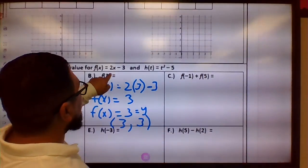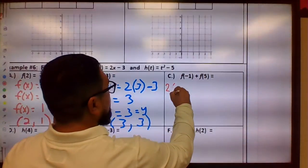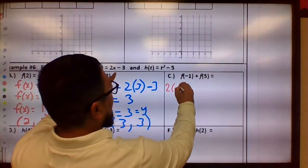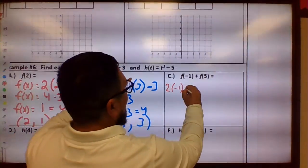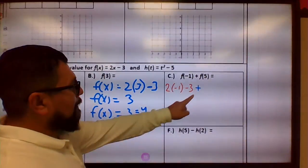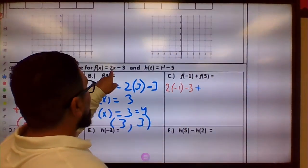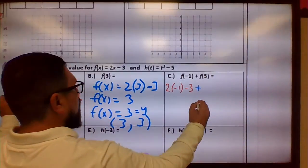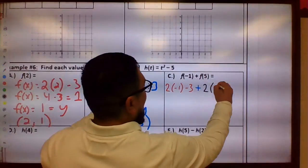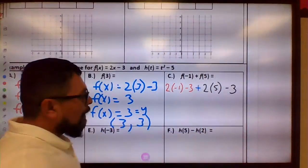So this is going to be, I'm going to put them in two different colors, so 2 times negative 1 minus 3, and this is going to be plus, and then F of 5, so x equals 5, so it's going to be 2, and x is 5 minus 3.